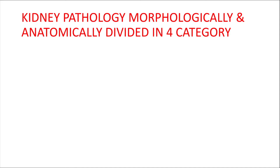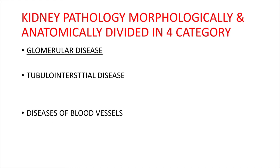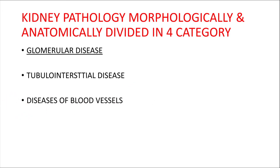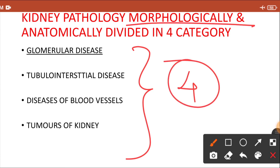Kidney pathology is morphologically and anatomically divided into four categories. The first category is glomerular diseases, which include nephritic syndrome and nephrotic syndrome. The second category includes tubular interstitial disease like tubular interstitial nephritis, pyelonephritis, and acute tubular necrosis. The third category is diseases of blood vessels, which include thrombotic microangiopathy, nephrosclerosis, and vasculitis. The fourth category is tumors of the kidney.